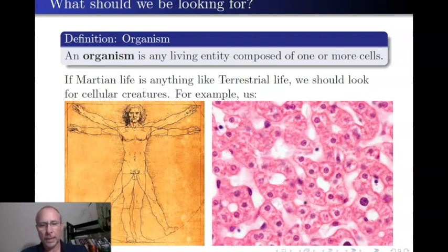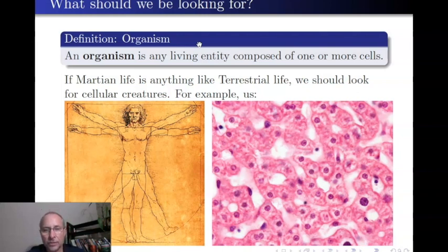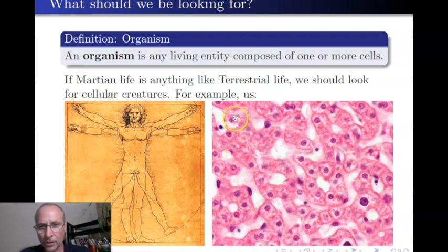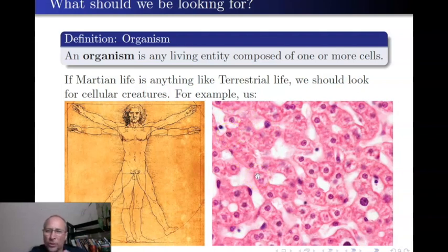So what are they looking for? They're looking for organisms. To a biologist, the technical definition of organism is any living entity containing one or more cells. That includes human beings. What you're looking at here is liver tissue — these are individual cells. That purple is a nucleus. The point is that right now it appears that the things we understand as being alive are things that are made out of cells, because all the living things we know of are made out of cells.